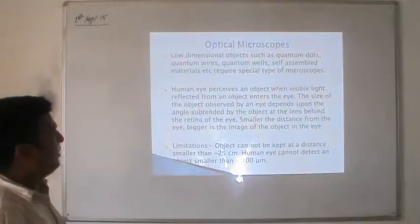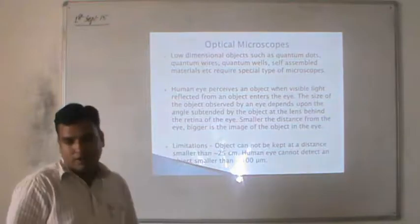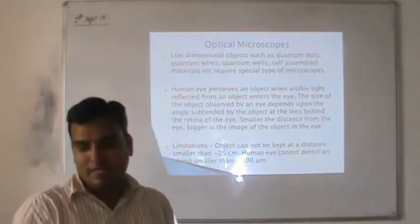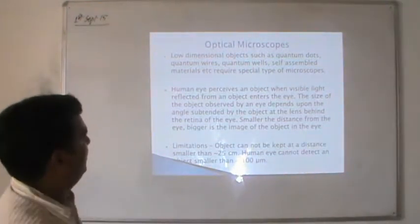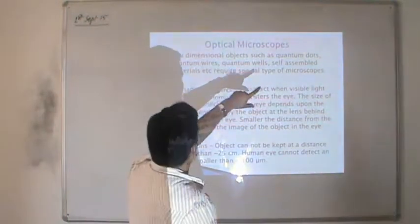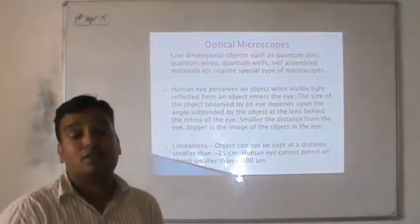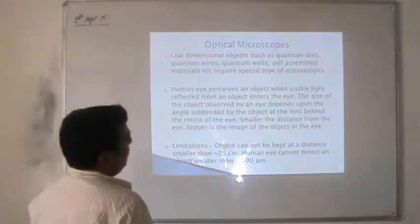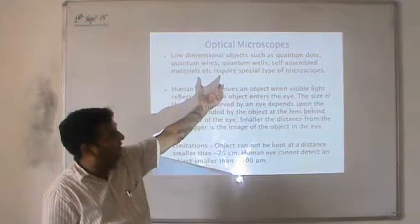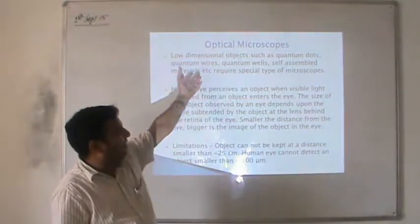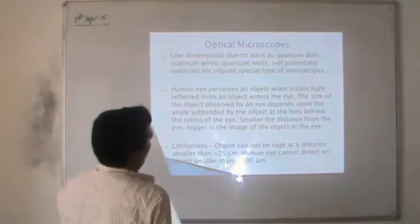When we talk about optical microscopes, we need to understand a few things first. Low-dimensional objects such as quantum dots, quantum wires, quantum wells, and self-assembled materials require special types of microscopes. These materials are very small in size, and we require some technique that magnifies the size of all material which lies at the scale of 10⁻⁹ meters or smaller. But why do we require the electron microscope?